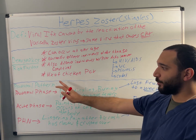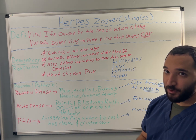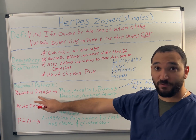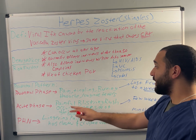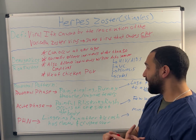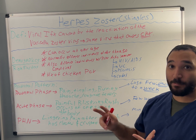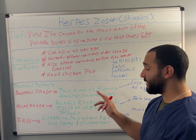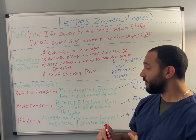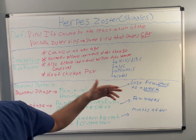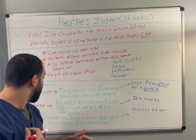The prodromal pattern includes the prodromal phase, which includes pain, tingling, burning, headaches, and a low-grade fever. This phase usually lasts a few days to a week.